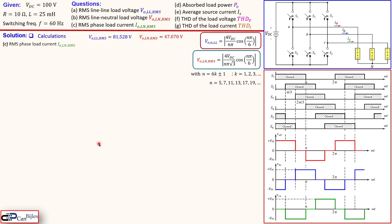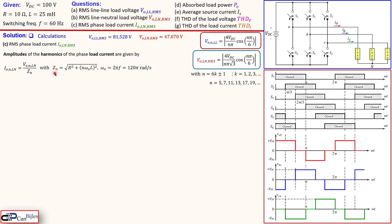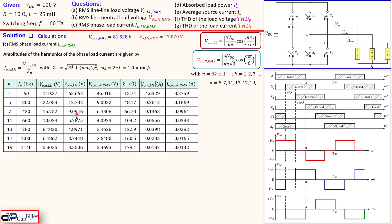Moving on to question C — the RMS phase load current. By Ohm's law we need the impedance, since we have harmonic voltages across the RL load. The impedance for each harmonic is the series combination of resistor and inductive reactance. The fundamental angular frequency is ω = 2π·f = 120π rad/s. We generate a table with columns for harmonic order n: 1, 5, 7, 11, 13, 17, 19, and the corresponding frequencies (n × 60 Hz).